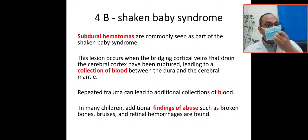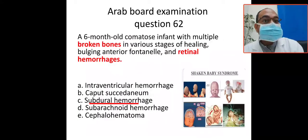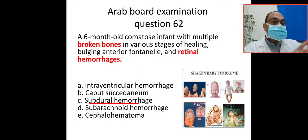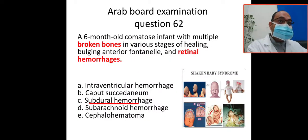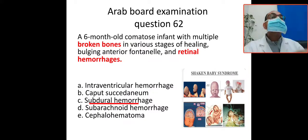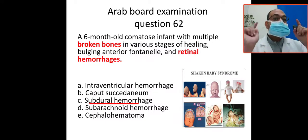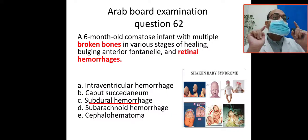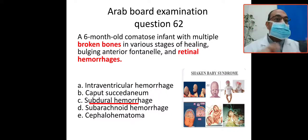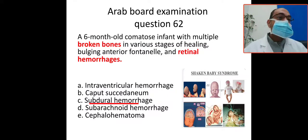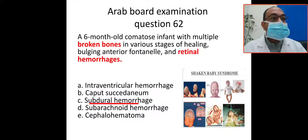So this is the case of shaken baby syndrome or child abuse. The child will present as comatose, with broken bones in different stages of healing, retinal hemorrhage, and the most common hemorrhage associated with shaken baby syndrome or child abuse is subdural hemorrhage.